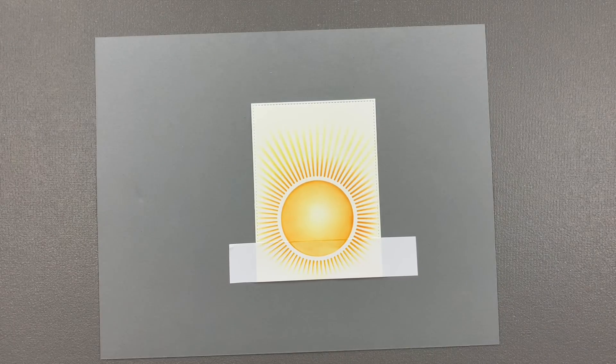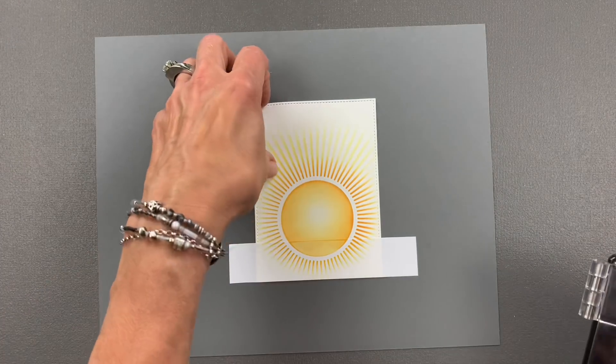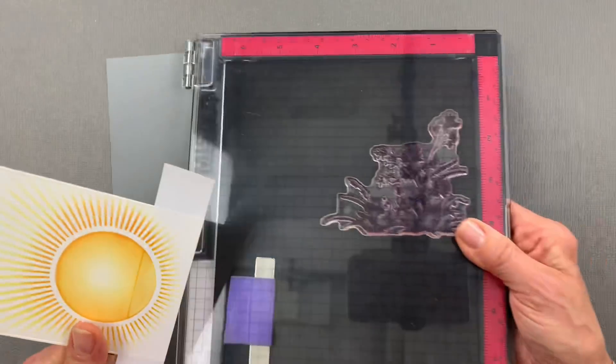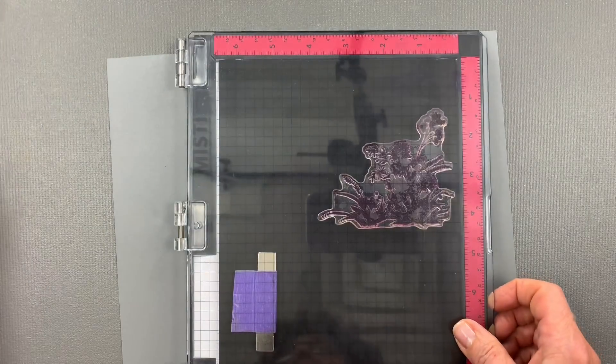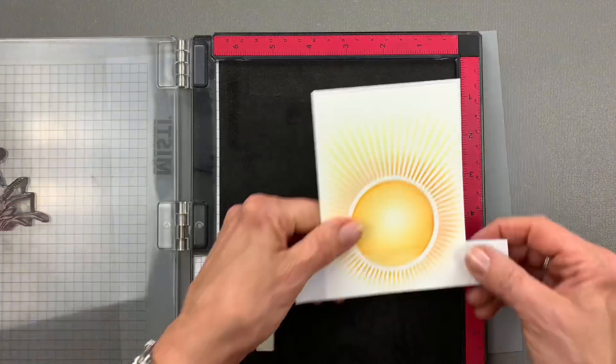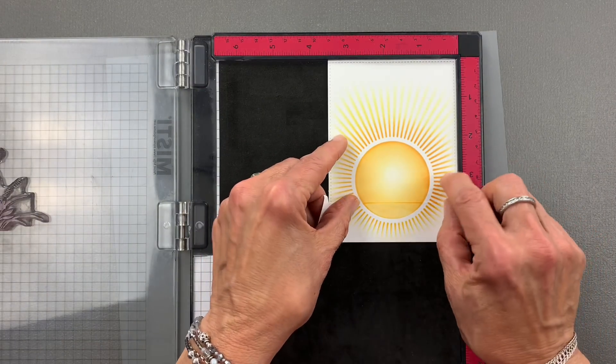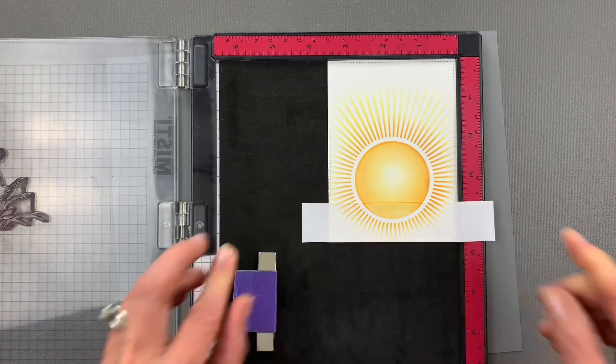Then I'm going to take that whole panel and put that inside my Misti. I've already loaded up a stamp from the Wild Blossoms stamp set. This is a nice silhouette stamp. You can use any silhouette stamp you want.